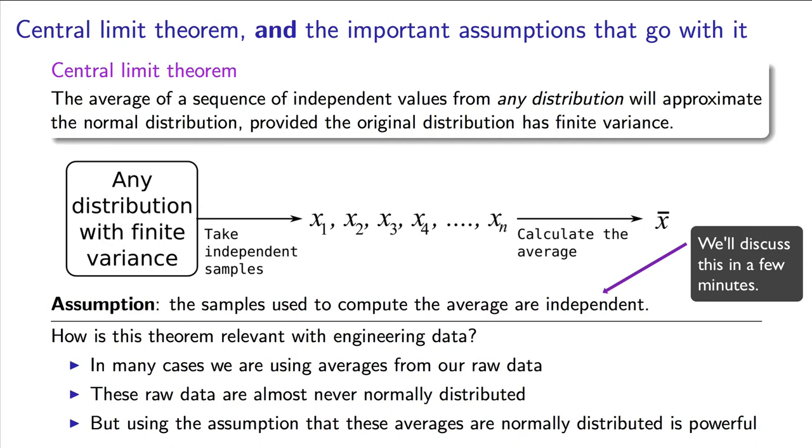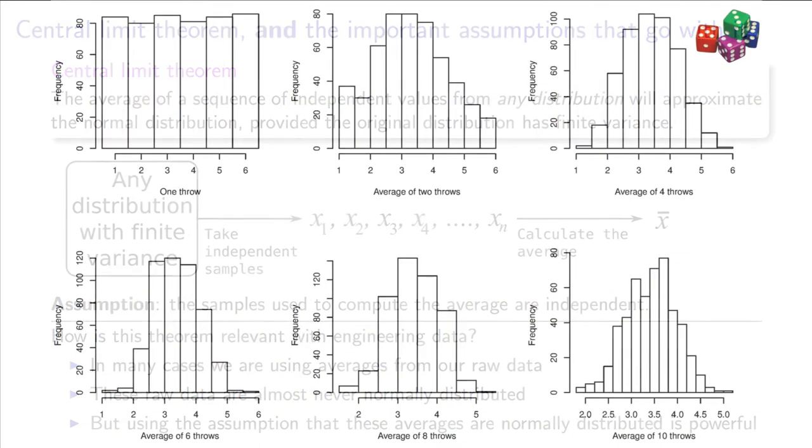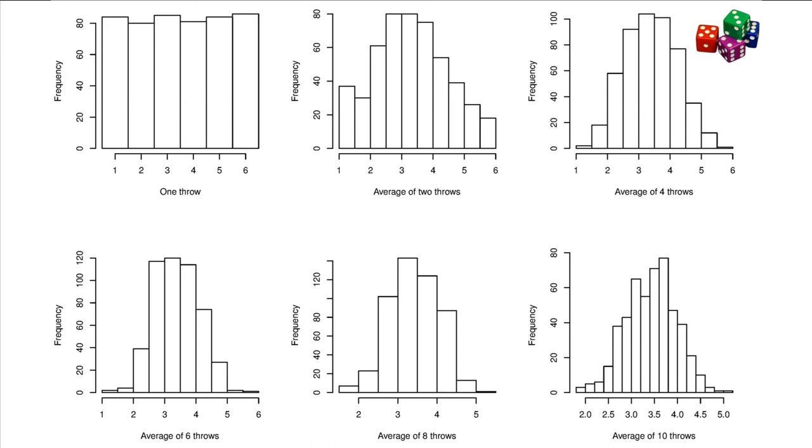We are more likely to violate that last restriction. Let's explain the central limit theorem visually now, using the idea of throwing dice.